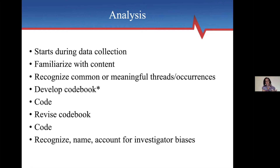You might get to transcript four and realize this person is saying something we hadn't thought of. So your code book is actually iteratively revised. At some point in the analysis, you do want to make sure that you are recognizing, naming, and accounting for investigator bias. Some journals, depending on where you submit and the word limit, may not let you include that, but it is a practice I strongly believe in. In my practice, we journal as we're doing the analysis — we write about what we're bringing to the table — and then we talk about it collectively because that actually affects how you interpret what the themes are and what's salient and important.